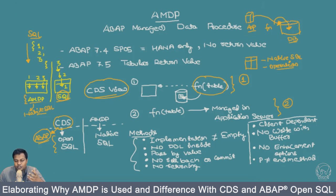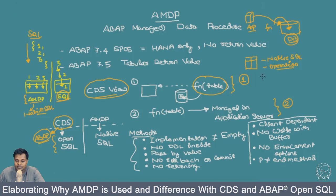How complex should the logic be? I need to execute those programs inside the database to take advantage of the HANA database. That's the two objectives which gave rise to AMDP. In AMDP, you have a class with some methods, and those methods use native SQL. The class has a method implementation M1, done using native SQL, and this class is used inside CDS views or inside ABAP.